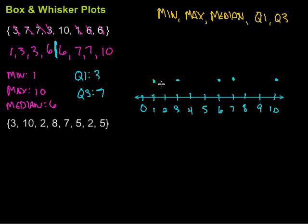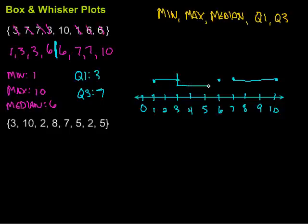Now I've got all my points, so how do I make my box and whisker plot? I start from the minimum and draw a line to the first quartile, and do the same thing from the maximum to the third quartile — those are my whiskers. Then the middle three points make my box, so I draw in the box from Q1 to Q3. Finally, I draw a vertical line right through the median. There's my box and whisker plot.